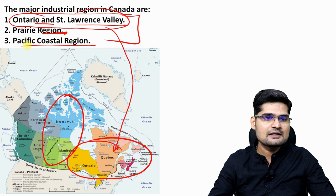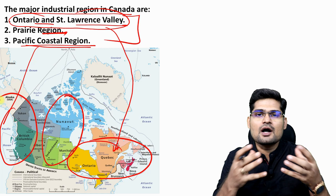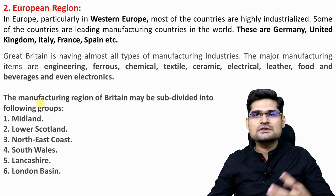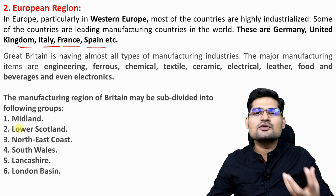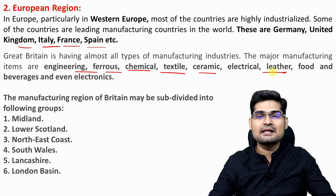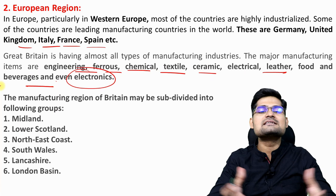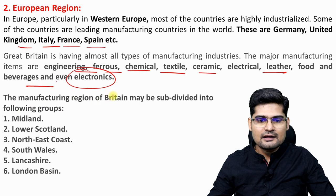In the European region, the hub is Western Europe — highly industrialized developed countries like Germany, UK, Italy, France, and Spain — with great variety of products including engineering, ferrous, chemical, textile, ceramic, electrical, leather, food and beverages, and electronics. In Britain specifically, the six important hubs are Midland, Lower Scotland, North East Coast, South Wales, Lancashire, and London Basin.